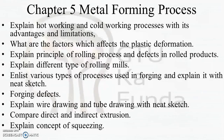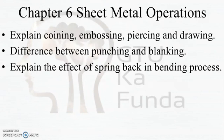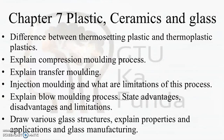If you just go through the listed questions you can pass the exam, but if you understand the method — for example, if I say explain hot working, be fully prepared for hot working so you can answer any question from it. For chapter six, Sheet Metal Operations, important topics are: coining, embossing, piercing, drawing, punching, and blanking, with a focus on the effect of spring back in the bending process. Covering punching and blanking, bending, spring back, piercing and drawing should be enough for this chapter.